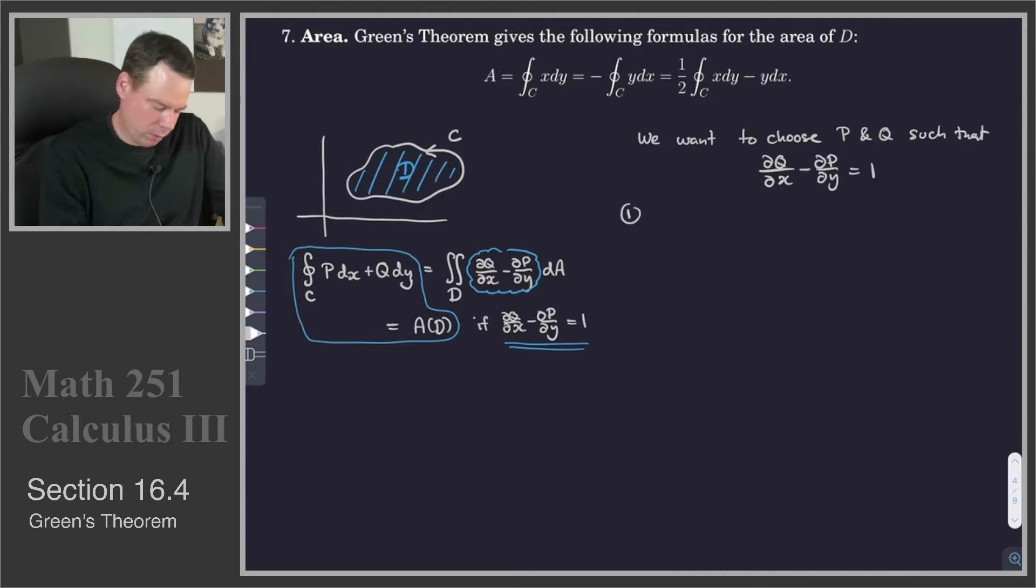So how can we do that? Well one way to do it would be to take P to be 0 and Q to be x.